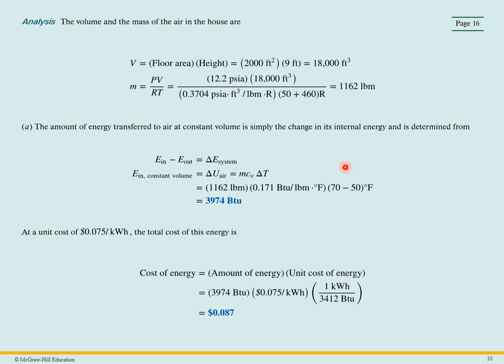So the amount of energy that's transferred is going to be calculated by M C_V delta T. So M we calculated here. The C_V we looked up and delta T is our difference between what we started and what we finished. So we end up with 3,974 BTU.